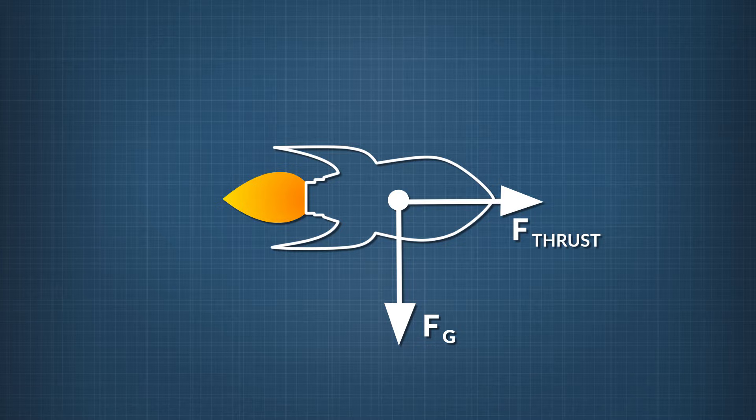and label it F sub F for friction. The air resistance is not as strong as the force of the rocket thrust. That means the arrow we draw for the friction force is shorter than F sub thrust.